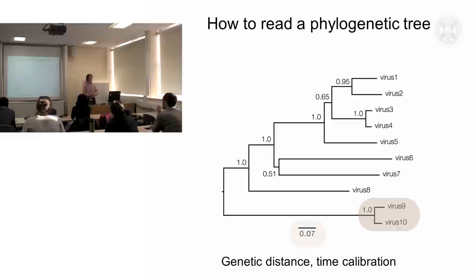And this down here is the key. So 0.07 refers to nucleotides per site in the alignment. So that gives a measure of the scale of the genetic distance between each of the virus groups.